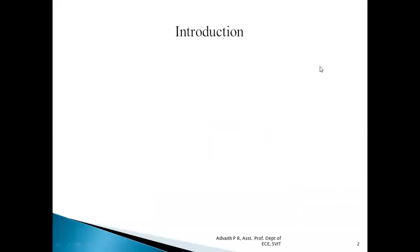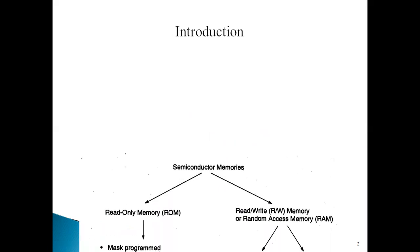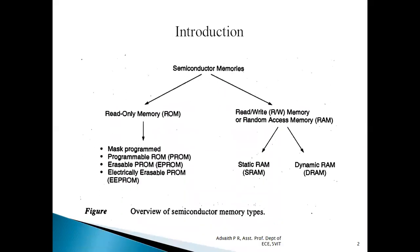We already know the classification of semiconductor memories. Semiconductor memories are majorly subdivided into two variations: read-only memory and random access memory, as shown in this particular figure.